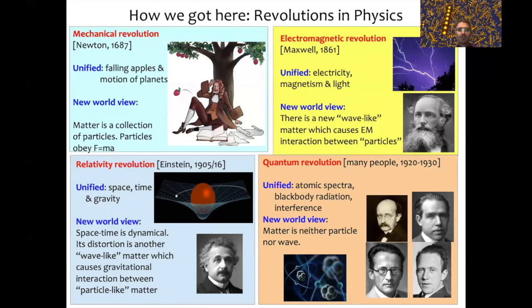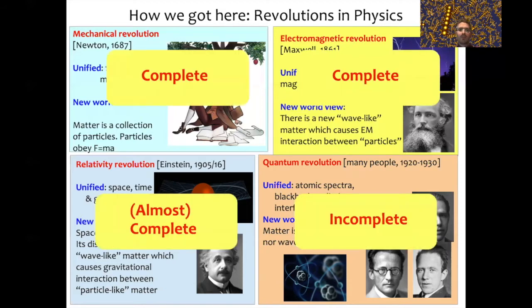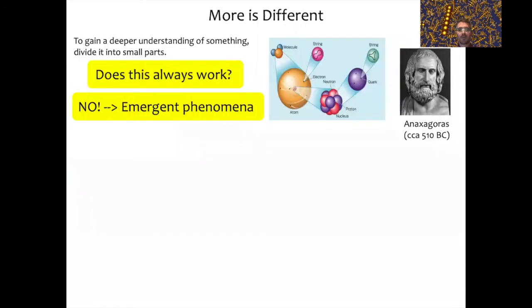If we think about these four revolutions in physics, basically we could say that three of them—the first three—are essentially almost complete, in the sense that we already understood all the big questions there. We understood what are all the fundamental ingredients necessary to formulate these theories. What's left to do is to explore the consequences of these fundamental principles. In contrast, this fourth revolution, the quantum one, is still pretty much incomplete and people are still debating even the very foundations of this theory.